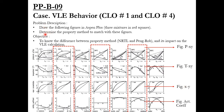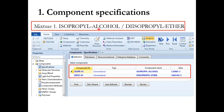In our problem description, we need to determine the property method to match with the given figures, and the objective of this simulation is to understand the difference between property methods. The first mixture we are going to take is isopropyl alcohol and diisopropyl ether. Since it is a very long name, we will specify a component ID for it, such as isopropyl-alcohol and diisopropyl-ether.